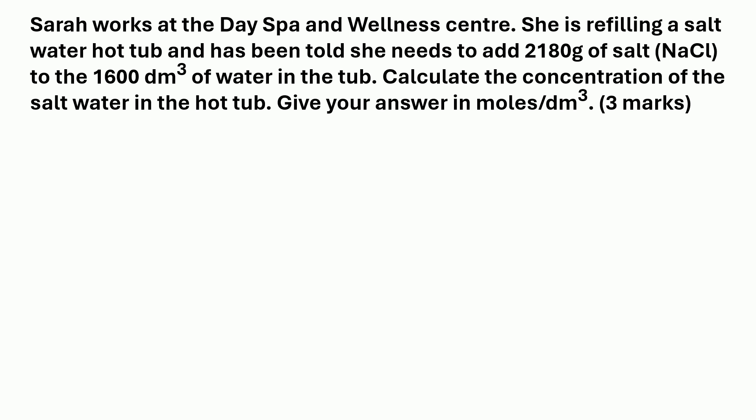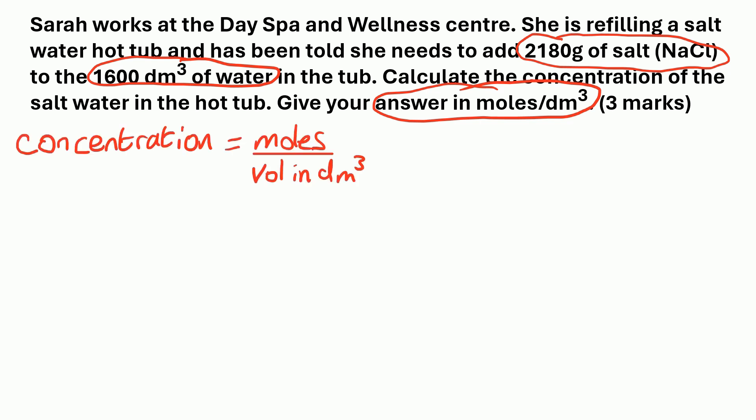So pause the video while you try and work it out. As on the last one, we'll circle any important information. We've got 2,180 grams of NaCl — that's the solute, the solid. And we've got 1,600 dm³ of water — the solvent. The answer has to be in moles per dm³, so the equation you need to remember is: concentration is moles divided by the volume in dm³.